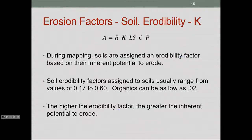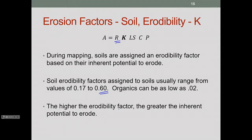The R factor is then modified by the soil erodibility factor K, which accounts for the condition of the soil. These factors are assigned to soils in a range from about 0.17 to 0.6. Organic soils can be as low as 0.02 — materials with a large amount of organic content tend to be very sticky and inhibit erosion. The higher the K value, the greater the potential to erode based on soil conditions.